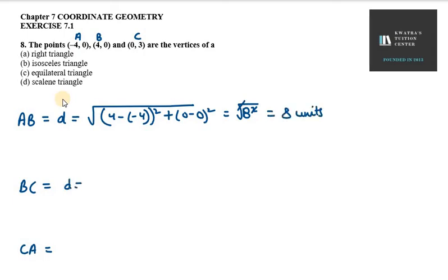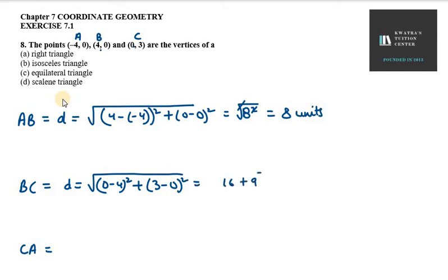Now for BC, we calculate (0 minus 4) whole square plus (3 minus 0) whole square, which gives us 16 plus 9 = 25. Since 25 can be written as 5 squared, the square root cancels out, giving BC = 5 units.